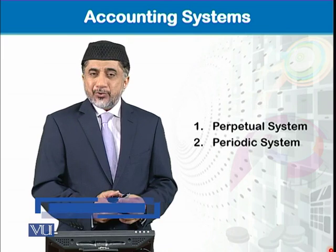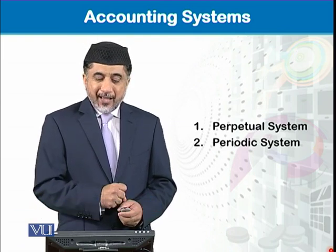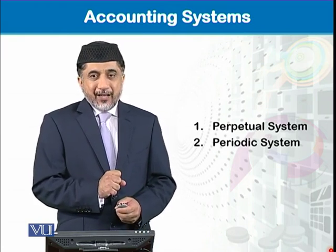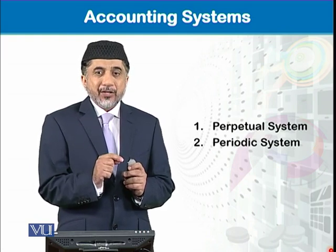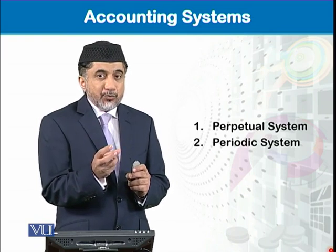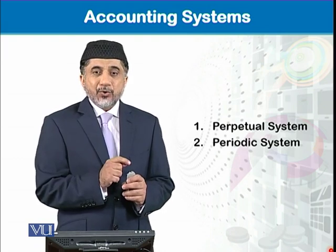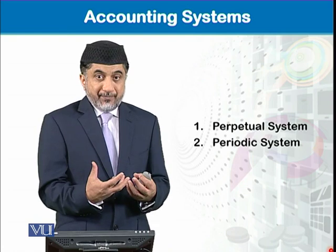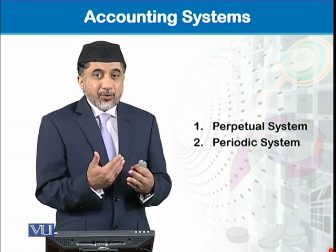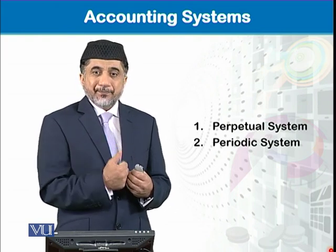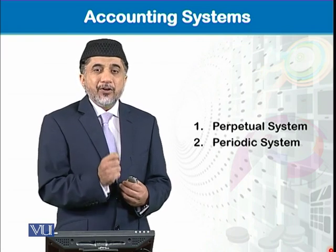There are two accounting systems followed to maintain inventory in our books of accounts: the perpetual system and the periodic system. The perpetual system means that after recording each transaction we get the balance of our inventory, which physically would be available in the store as well. Our ledger will show us the updated balance of the cost of inventory available in the store.